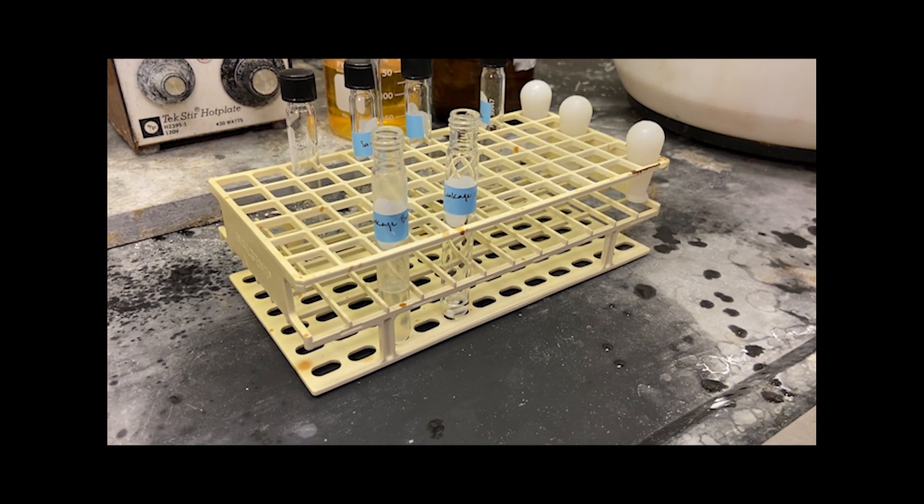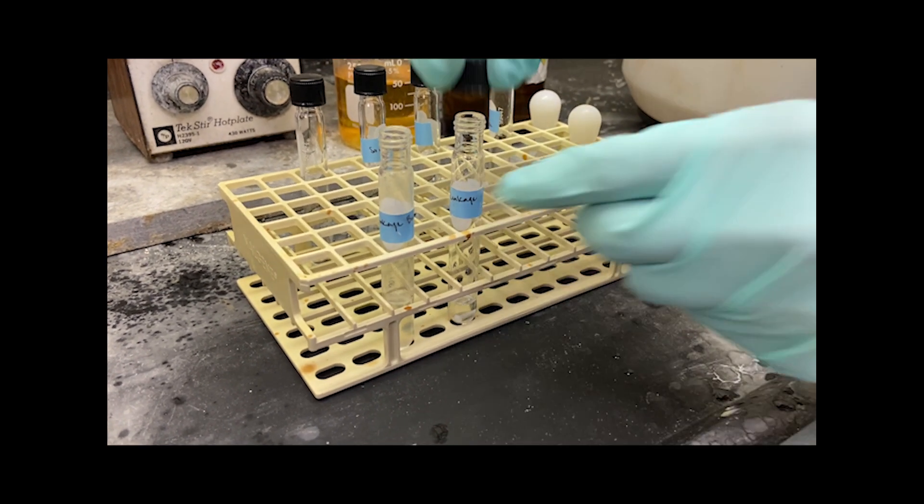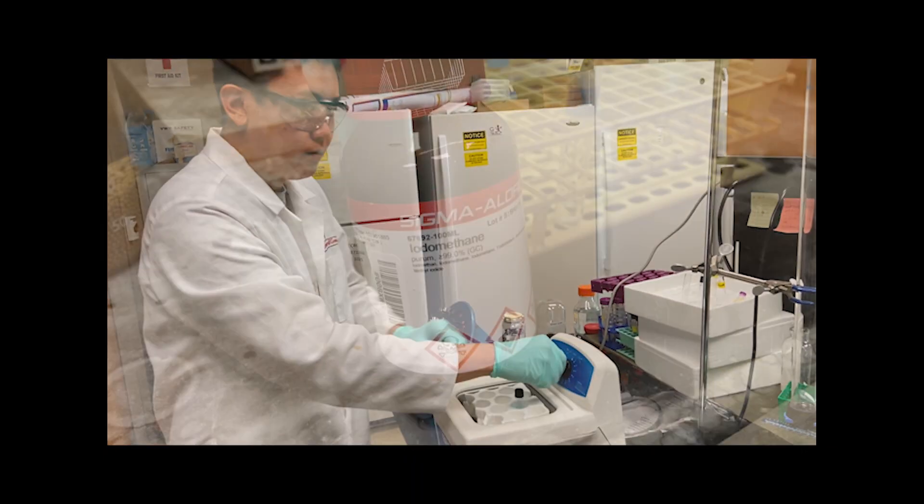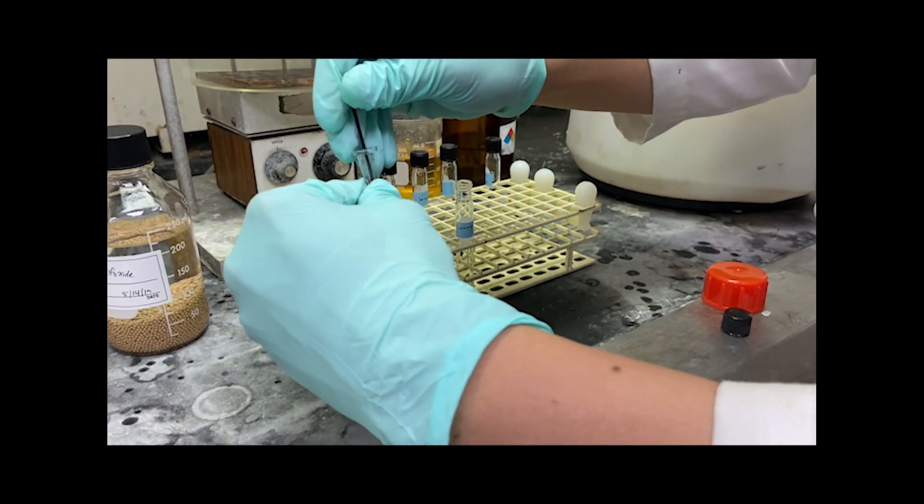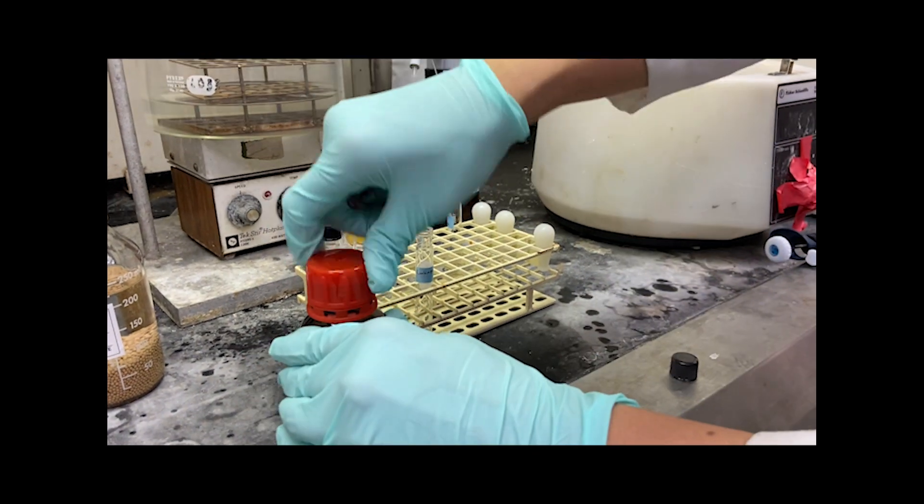We add 400 microliters of our base into our sample and sonicate the sample for 15 to 30 minutes. The sonication is to help insolubles, and magnetically spinning is okay. After sonicating, we add 100 microliters of iodomethane to the sample and allow the sample to spin magnetically for 40 minutes. This concludes one round of methylation.